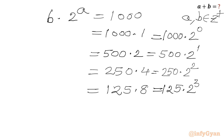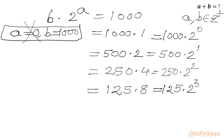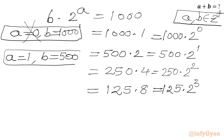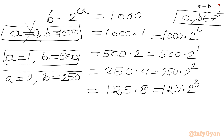In the first case, a equals 0 with b equals 1000 — we reject this since a and b must be positive integers and a equals 0 is not allowed. From the second case, a equals 1 with b equals 500. From the third case, a equals 2 with b equals 250. And from the last case, a equals 3 with b equals 125.